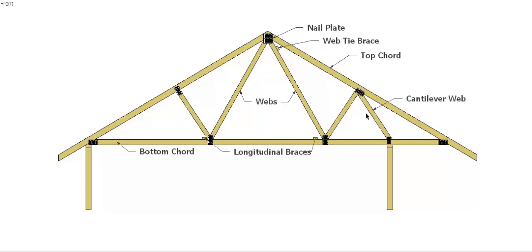We have this member here which is a cantilevered web. As I said before, the only reason that's here is because we have a cantilevered section on this truss and we need a point to take the support where that load is going to go on to that wall. So that's a cantilevered web - wouldn't normally be seen in a standard truss.